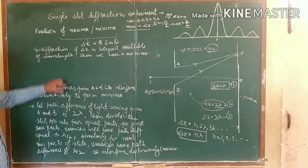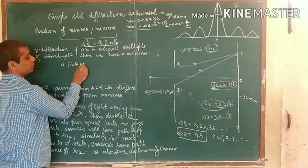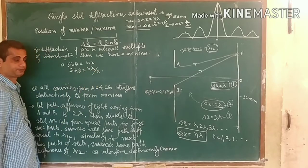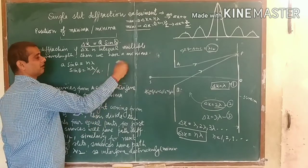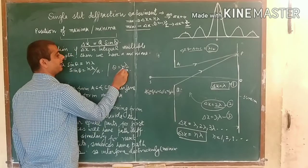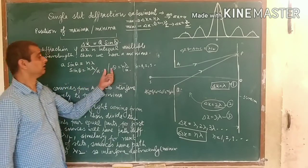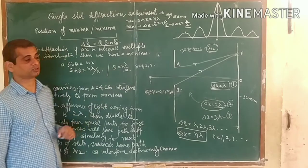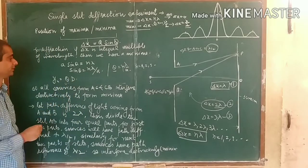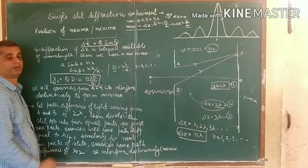We already calculated that path difference equals a·sin θ. For minima, a·sin θ equals N lambda, so sin θ equals N lambda divided by a. If the angles are very small, since the screen distance is very large, then θ equals N lambda by a. If you want to calculate in terms of position on the screen, multiply by D: y equals N lambda D by a. So this is the position of minima on the screen.